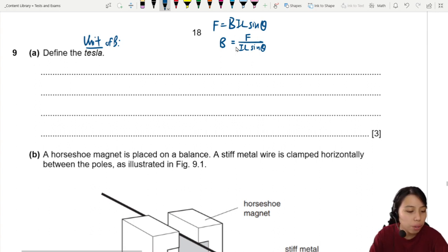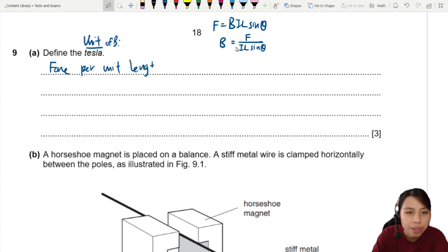So force per unit length. Okay, so force, let's go with that. Per unit length. Also known as, better to write also the units that you show that you know, because sometimes they do give marks for that. One Newton per meter.